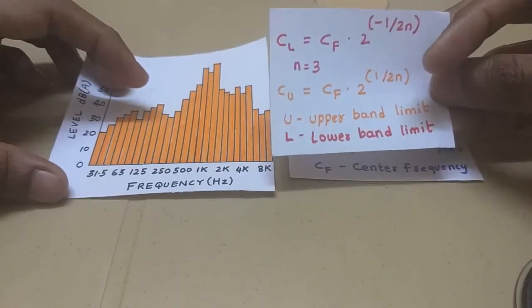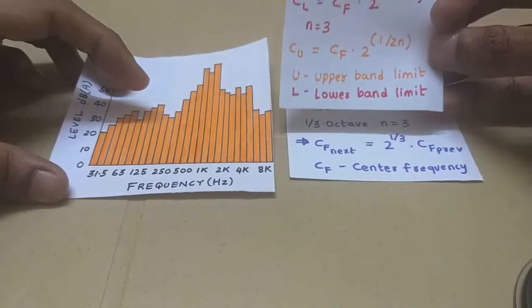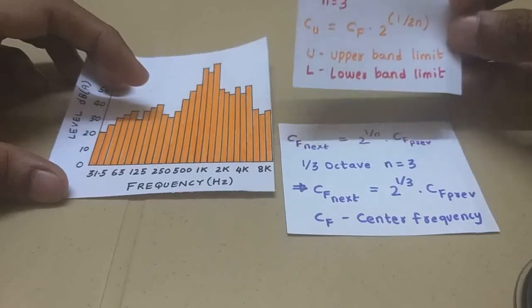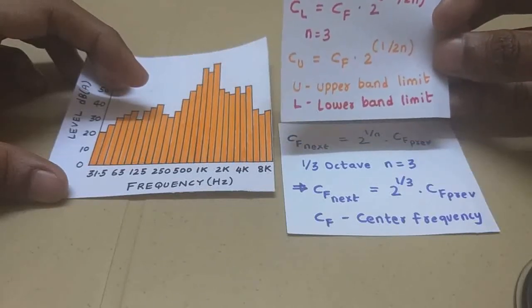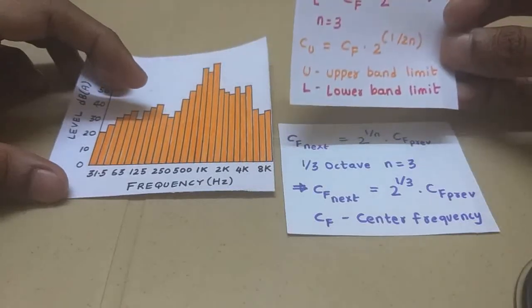Now these values, there are a lot of values because there are 32 bands, 32 center frequencies. I've included all the tables in the link in the description below. So check it out.